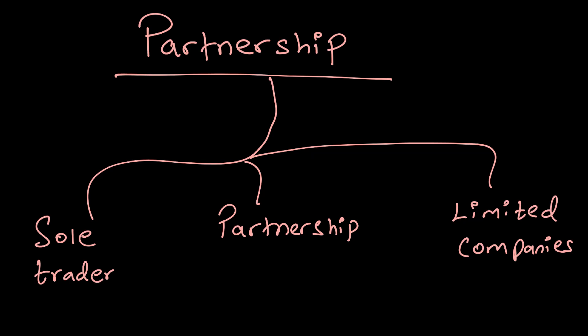After covering limited companies, we can now move to the next topic called partnership. Everyone should keep the spectrum in mind: on one hand we had a sole trader — a single entity running the business, making all the decisions, taking all the profits. Then we looked at limited companies, where a company would issue shares and take money from the market, and you can have hundreds or thousands of owners in the form of shareholders. We now move to the next entity, which is called a partnership.